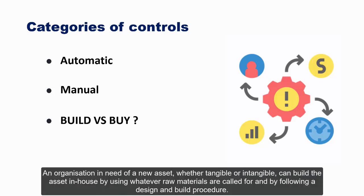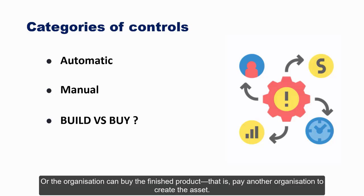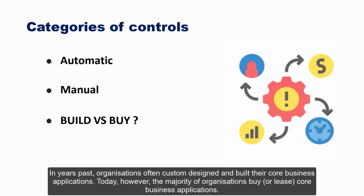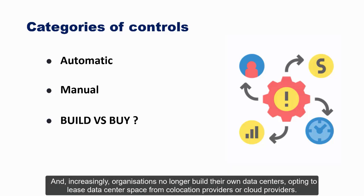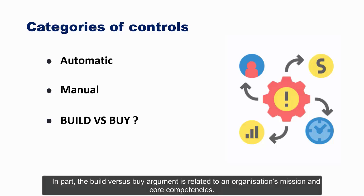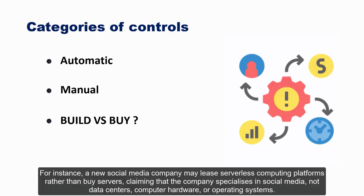In years past, organizations often custom designed and built their core business applications. Today, however, the majority of organizations buy or lease core business applications, and increasingly organizations no longer build their own data centers, opting to lease data center space from collocation or cloud providers. The build versus buy argument is related to an organization's mission and core competencies — for instance, a new social media company may lease serverless computing platforms rather than buy servers, claiming that the company specializes in social media, not data centers.